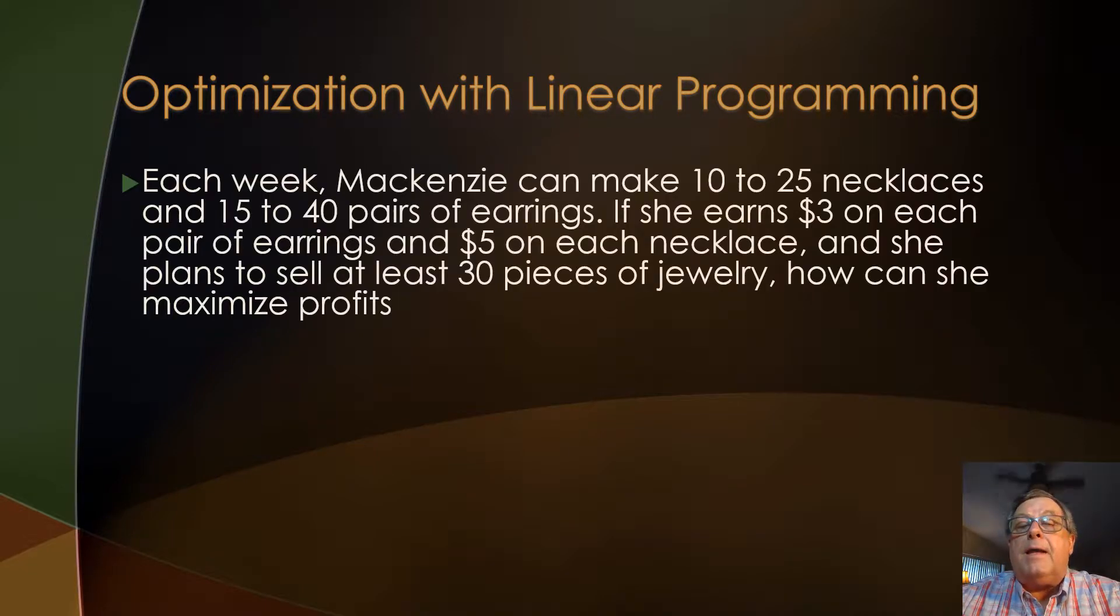Each week, Mackenzie can make 10 to 25 necklaces and 15 to 40 pairs of earrings. If she earns $3 on each pair of earrings and $5 on each necklace, and she plans to sell at least 30 pieces of jewelry, how can she maximize her profits?